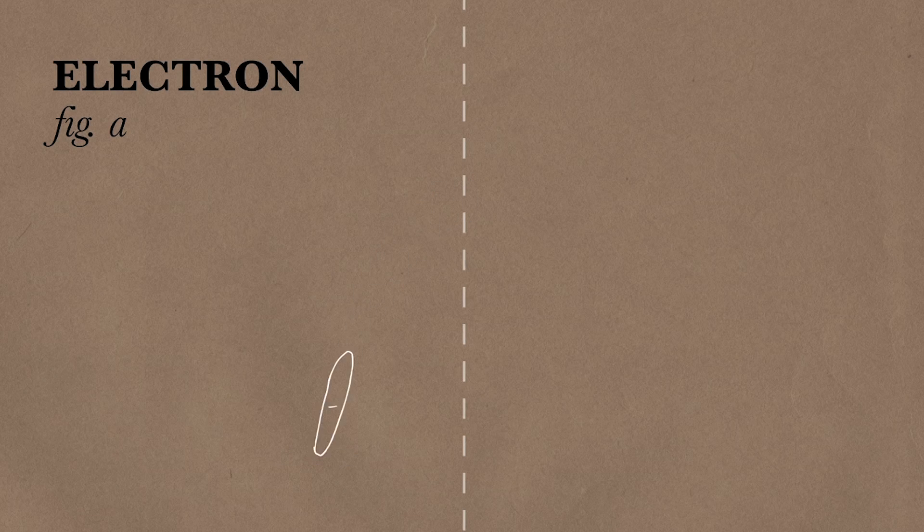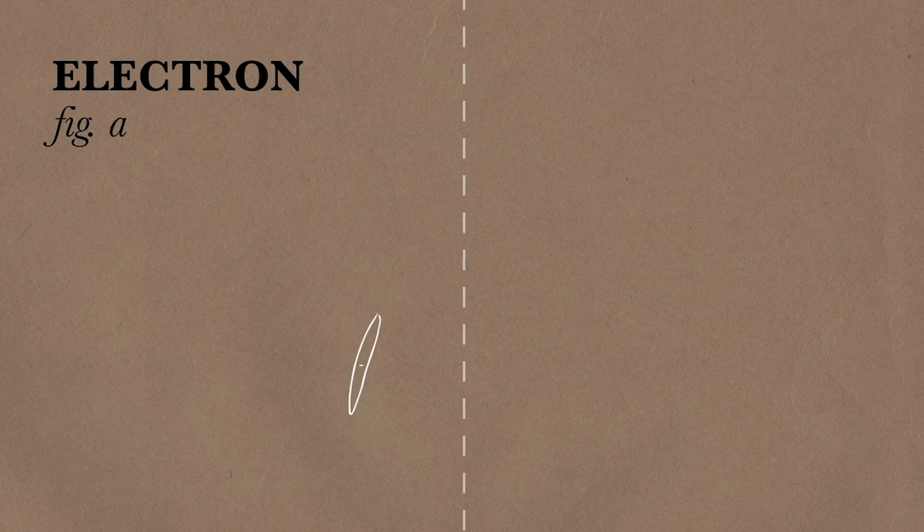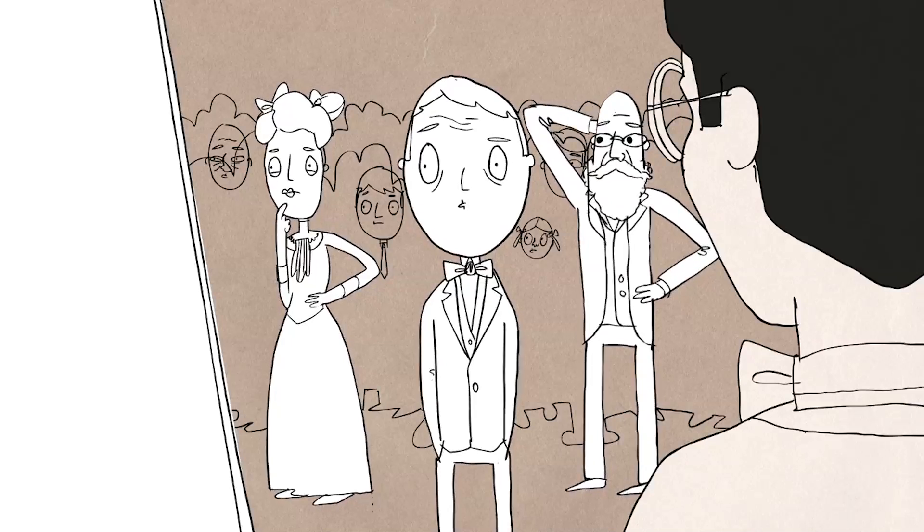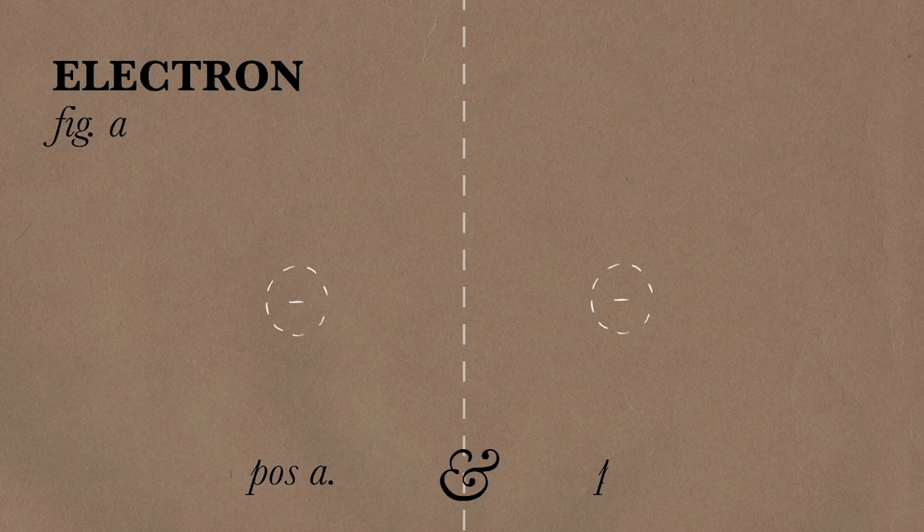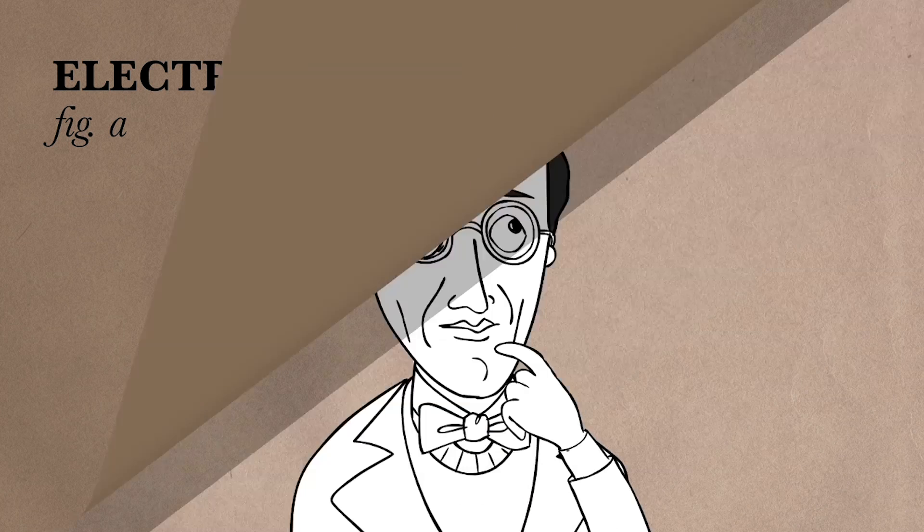But it's essentially that when something is really, really small, like an electron, and you can't make an observation about it, you actually have to say, by the very fact that you can't observe it, that it's in both this place and this place at the same time. It's in a superposition.